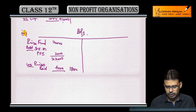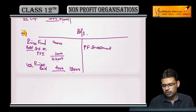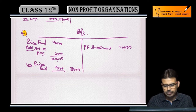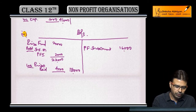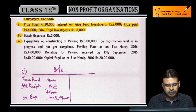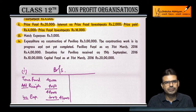Price fund investment bhi hai. Kisi bhi tarah ki investment — general investment ya specific investment — humesh asset side par show hogi. Lekin jo fund hai, wo liability side par show hoga. Fund related jitni incomes thi — 2,000 — add kar di; 4,000 prices paid minus kar di. Aur price fund investment balance sheet mein asset side par show hogi.